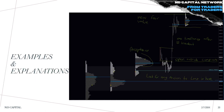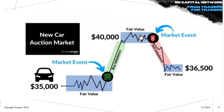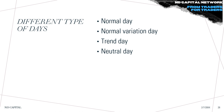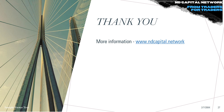Remember to view all of this in that auction market perspective. Last but not least, keep in mind there are different types of days: normal day, normal variation day, trend day, and neutral day. I share more information about these in the Discord and on the website and guides. For more information visit www.ndcapital.network. Thank you for watching — stay wise and have fun trading.